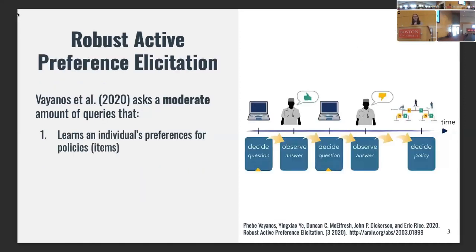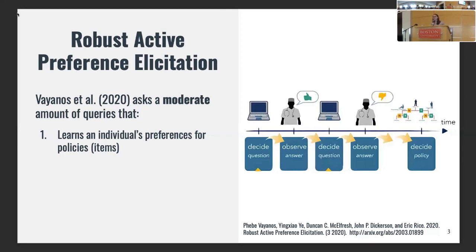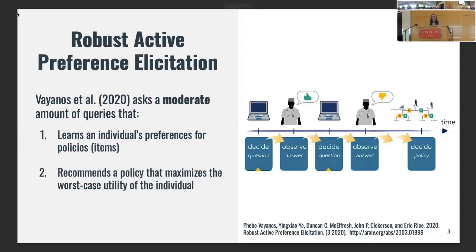One such method is that by Lyonless et al. It's a robust active preference elicitation method that uses methodology from robust optimization to do preference elicitation. They're able to ask a moderate number of queries that will essentially learn individual preferences for policies or any sort of general item. At each stage of the online algorithm, it decides a query to ask an individual about their preferences, the individual gives their response, and the algorithm uses that to ask the next question.